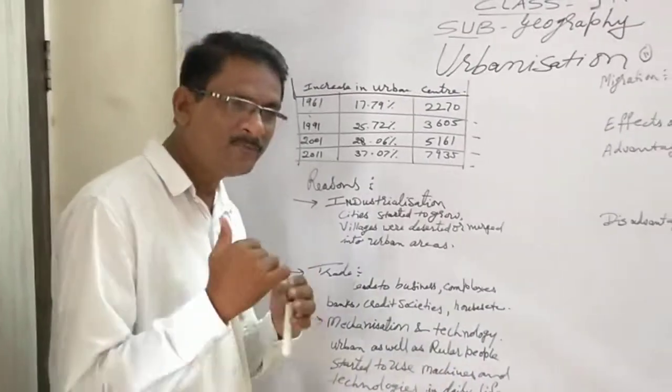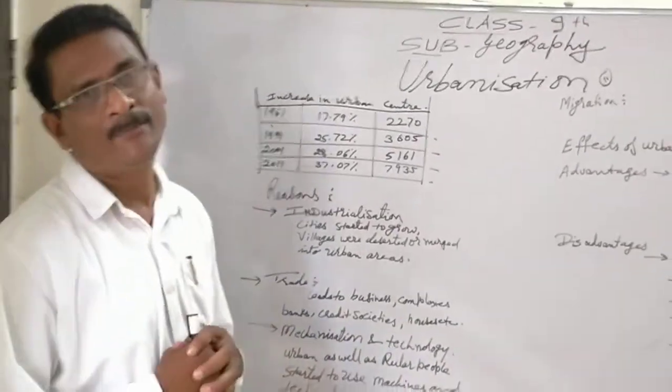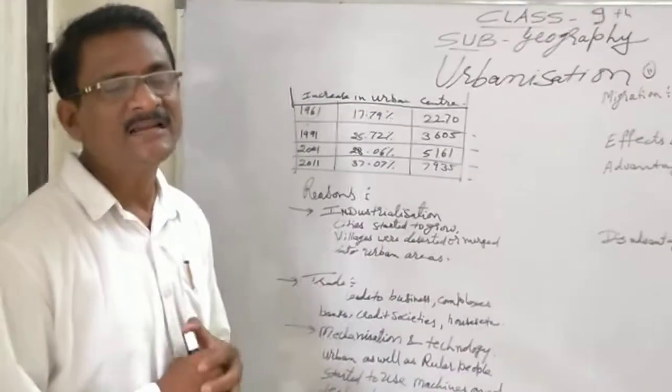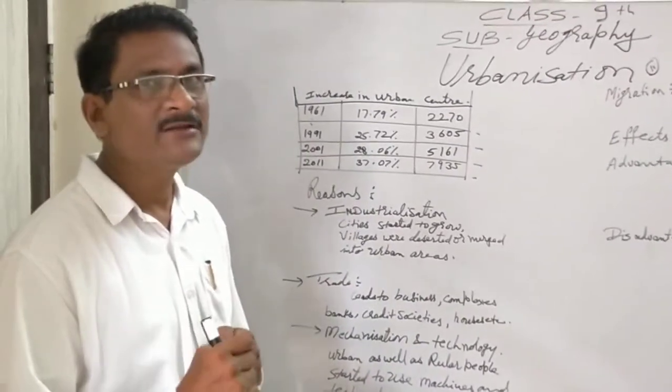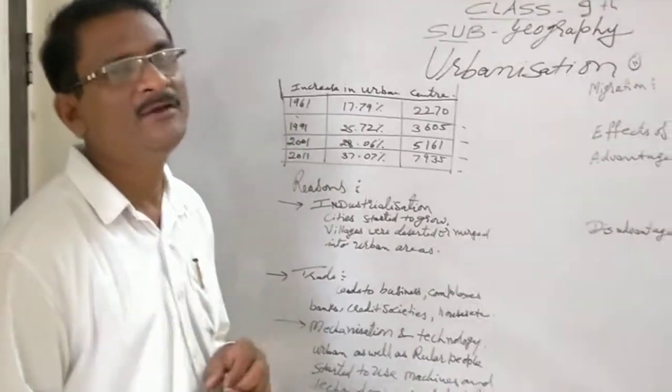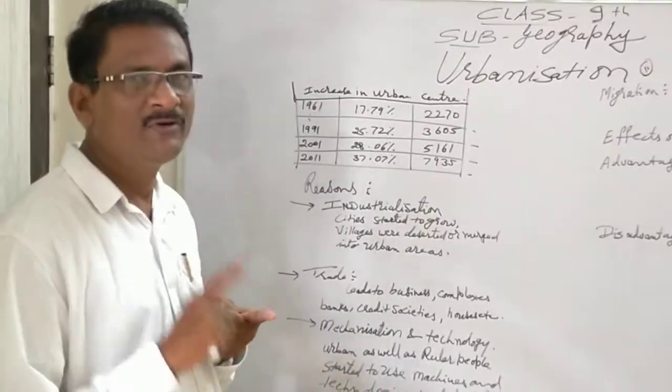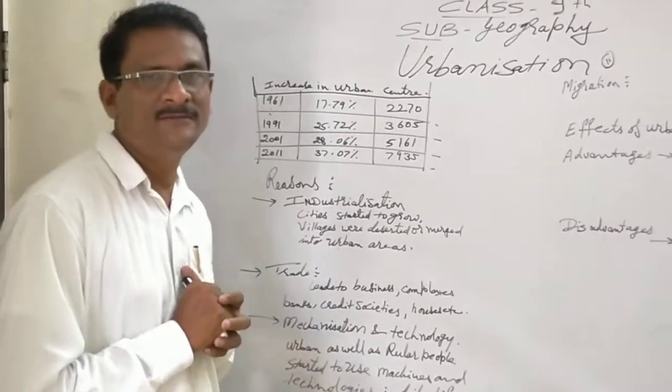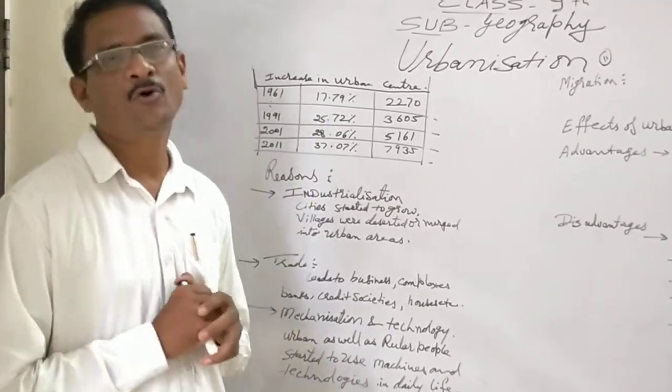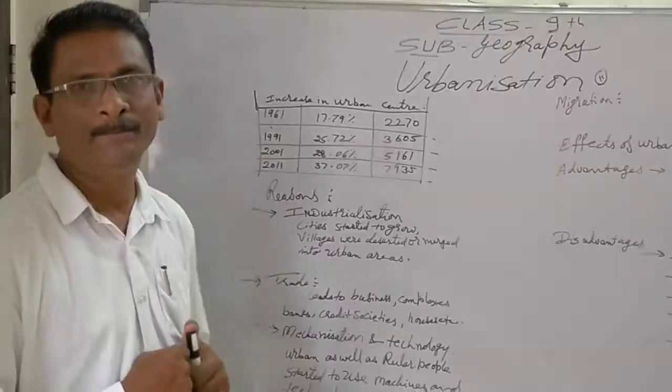Now starting with the reasons, first we come to know that in the second five year plan, India gave impetus to industrialization. That was the beginning of industrialization.